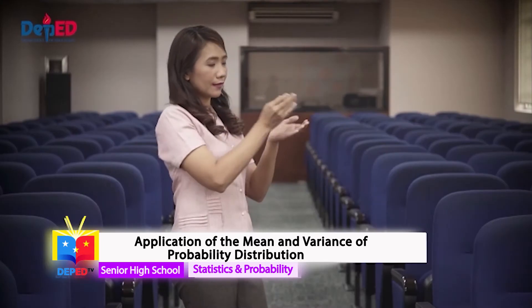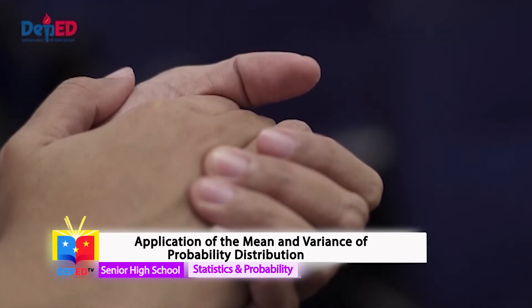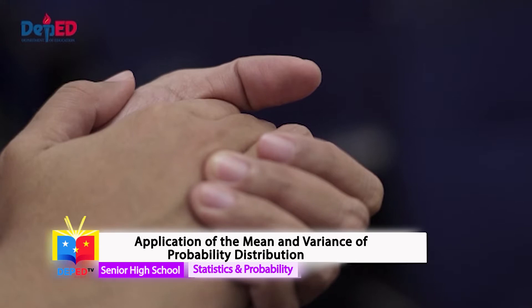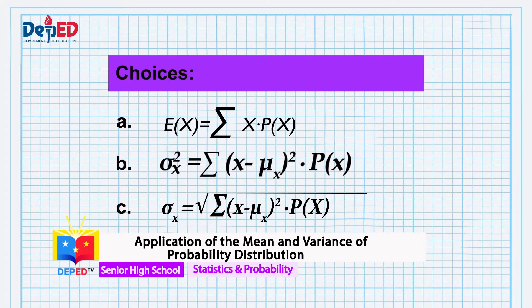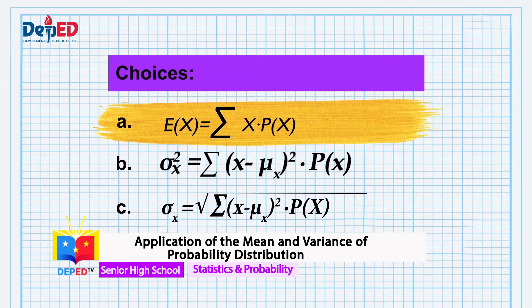First, I am curious about finding the average number of heads that would appear if I toss two coins together. Which formula should I use? Since I want to look for the average number of heads, that means I need to find the expected value or mean of the distribution. So if your answer is A, then you're correct because the given formula in A is the formula for finding the expected value or mean of the distribution.